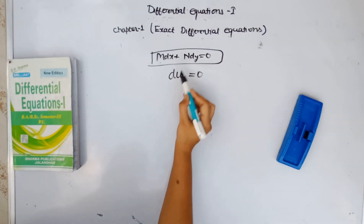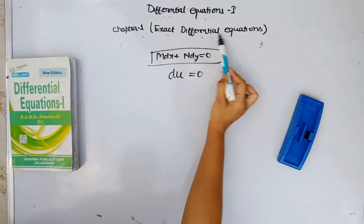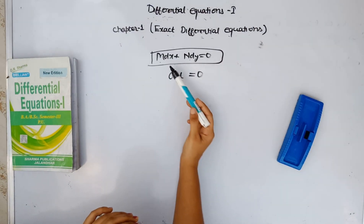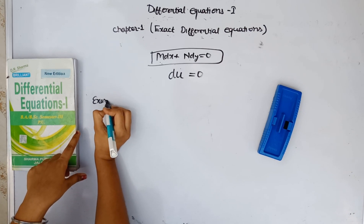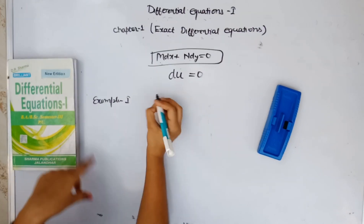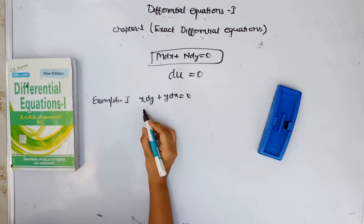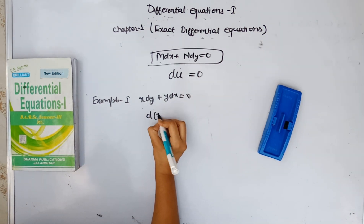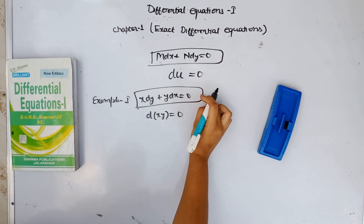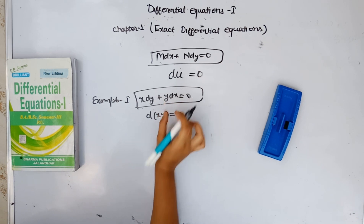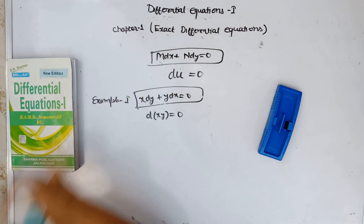We have a differential equation where M and N are functions of x and y. Such an equation is called an exact differential equation when we can recognize the whole derivative. For example, y dx plus x dy is equal to 0. We know that this is the derivative of xy equal to 0. Therefore, this equation is called an exact differential equation because we can write it in the form of its total derivative.